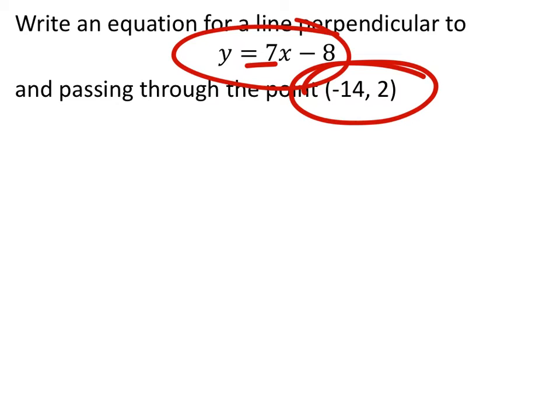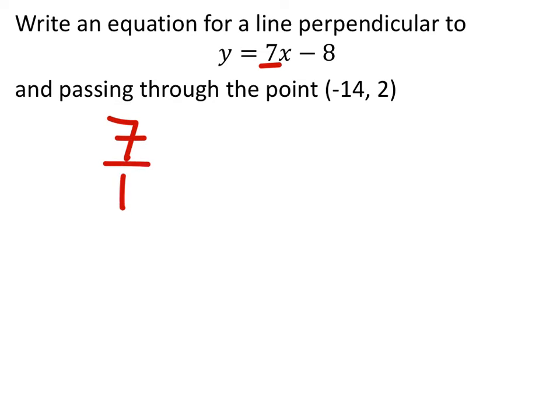First thing we want is the slope. Notice in this equation that the slope is 7. Hopefully you guys remember from the last lesson, but a perpendicular line is going to have the opposite reciprocal slope. So this slope here is 7 over 1. We make that a fraction so we can reciprocate it. The opposite, since it's positive, would be negative. And to reciprocate means we flip the fraction: 1/7.